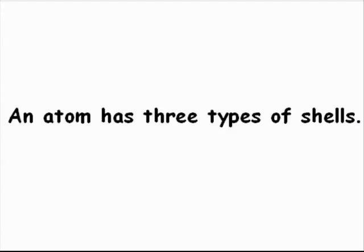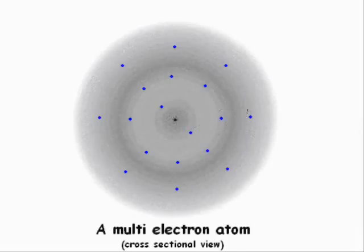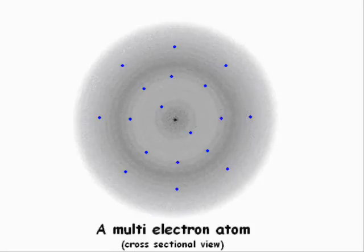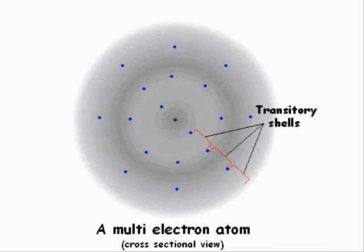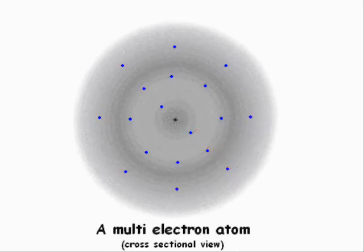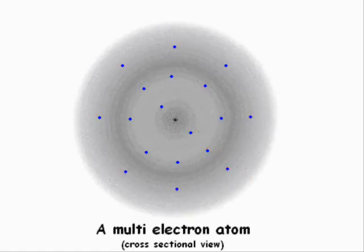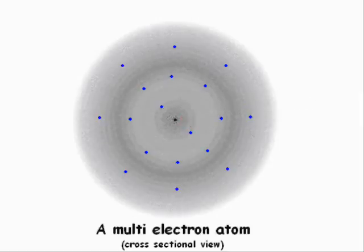An atom has three types of shells. First, electron shells — these are the shells in which electrons are configured when the atom is in a non-excited state. Second, transubrations — these are the regions into which electrons can jump from the electron shells when an atom is in an excited state. An atom has an enormous number of transubrations; the inner transubrations are the shells inside the innermost electron shell.